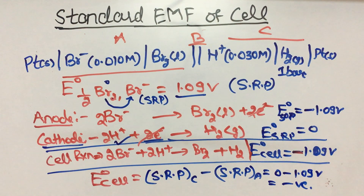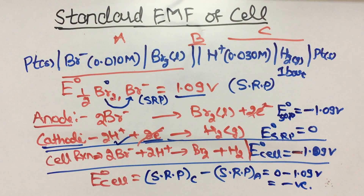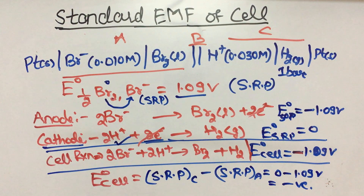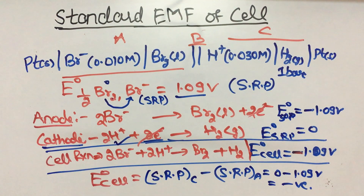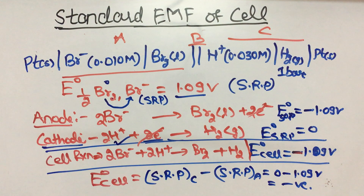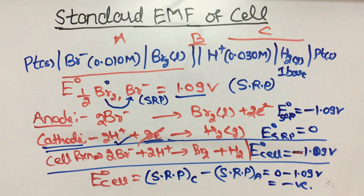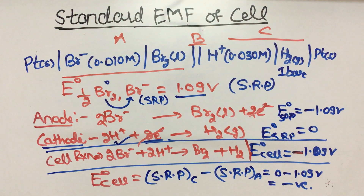So we found anode and cathode using two methods — LOAN or ABC — and we found E0 cell using two methods. After that you can calculate the EMF of the cell using the Nernst equation, which I will explain in the next video. This is the best way to follow NCERT questions. Thank you!